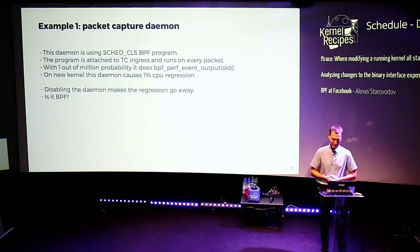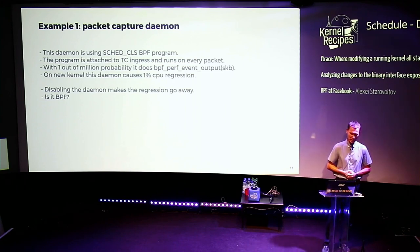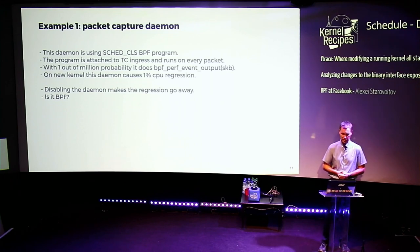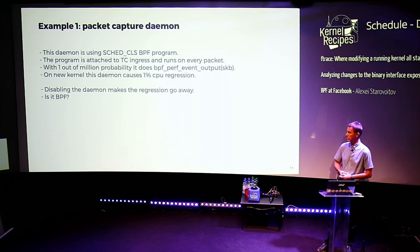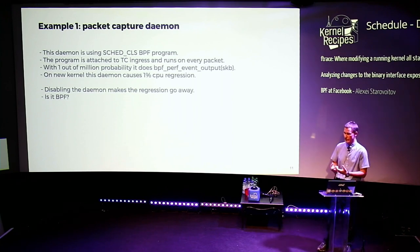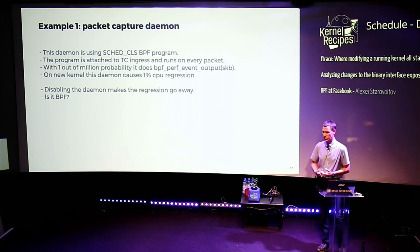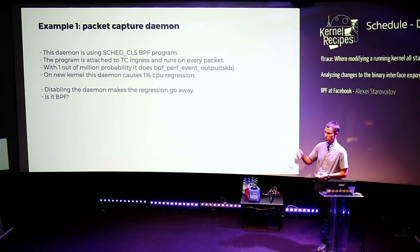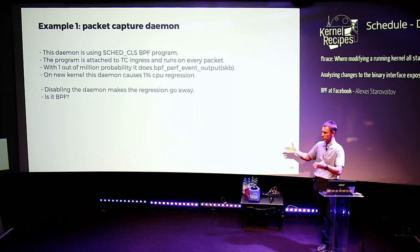Let me give you a few examples. We have a packet capture daemon that's rolled everywhere. It's sampling one out of every million packets on every server, doing just the standard perf event output through the perf ring buffer back to user space. While deploying a new kernel, we find that somehow this daemon is causing a 1% CPU regression. Removing this daemon, the 1% regression goes away. It's obviously using BPF, so it must be BPF.